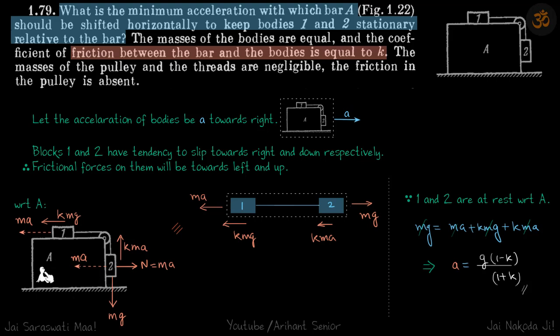So with respect to the block A, which is moving with the acceleration A towards right, we will have the pseudo force towards left on both the blocks. They have the same mass, so the pseudo force will be MA and MA on each of the blocks.